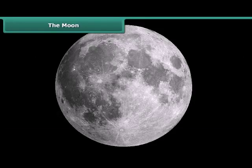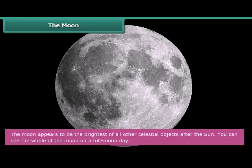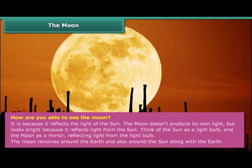The Moon appears to be the brightest of all other celestial objects after the Sun. You can see the whole of the Moon on a full moon day. It is because it reflects the light of the Sun. The Moon does not produce its own light, but looks bright because it reflects the light from the Sun.